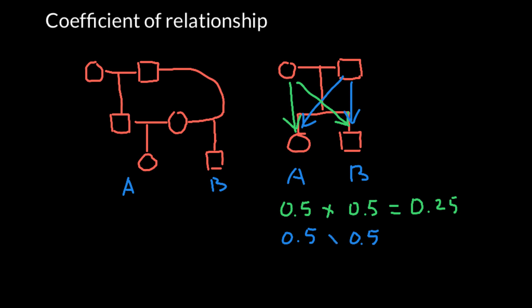We can expect that about 25% of the genetic makeup that these two individuals inherited from the father's side they are going to share. If we add these two numbers we get 0.5, so individual A and B would share about 50% of the genetic makeup.